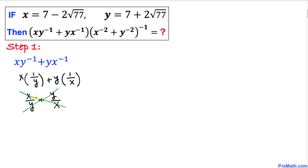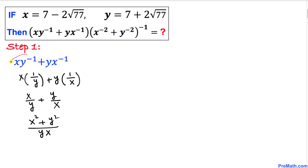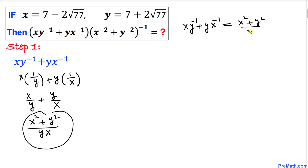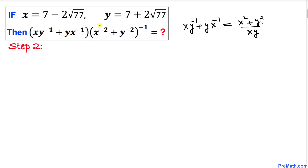x times x gives us x², and y times y gives us y², with denominator y times x. So xy⁻¹ + yx⁻¹ simplifies to (x² + y²) / xy.